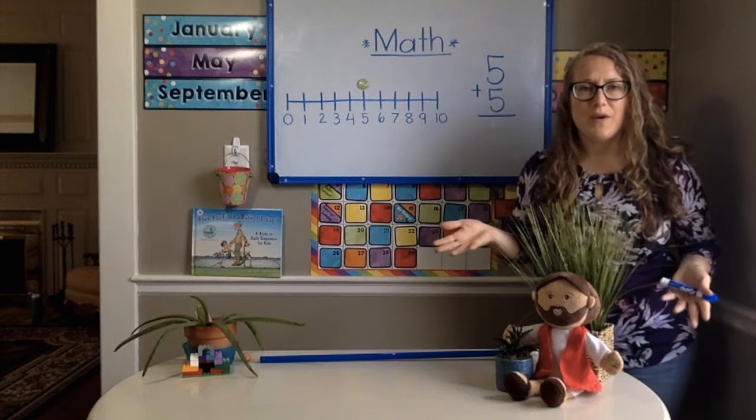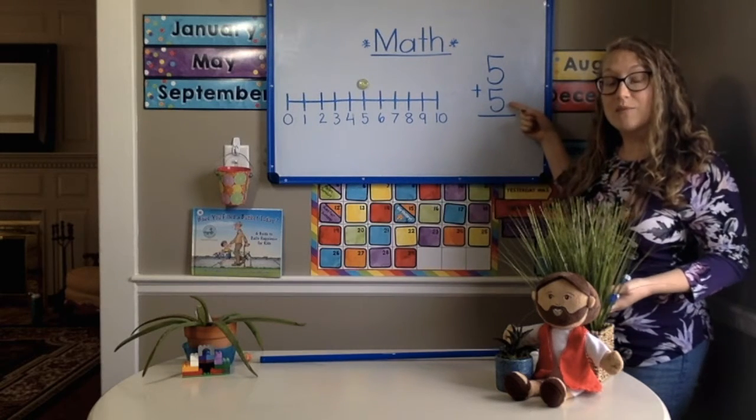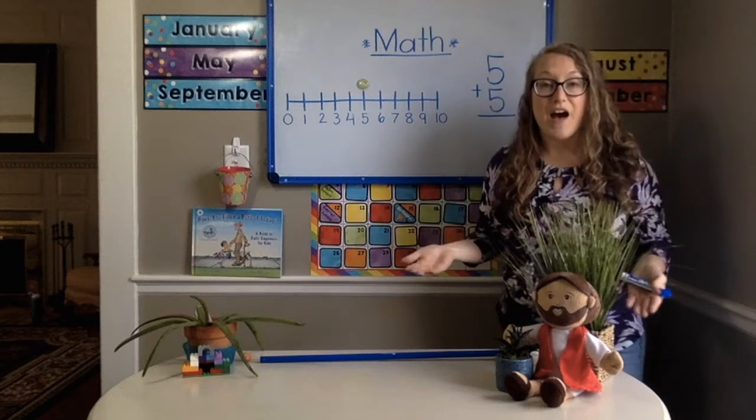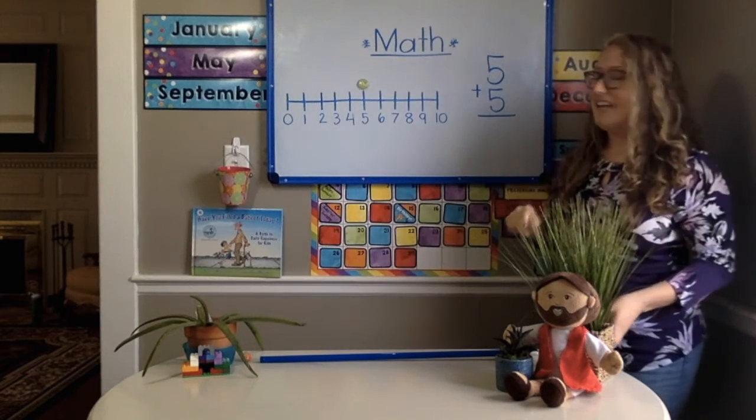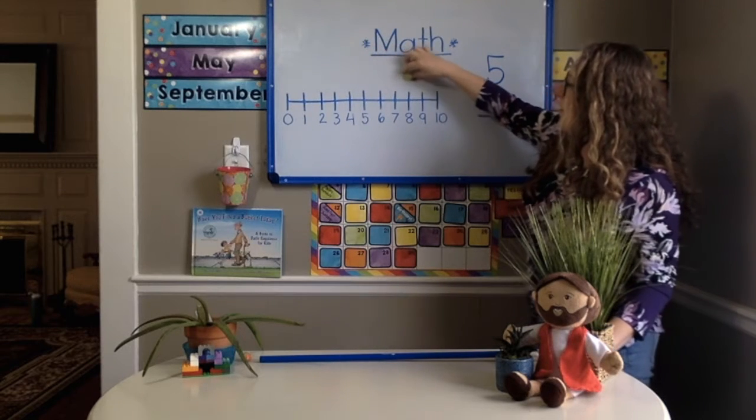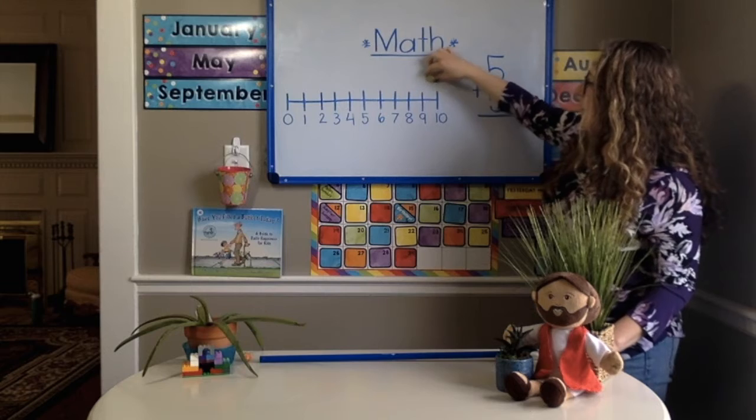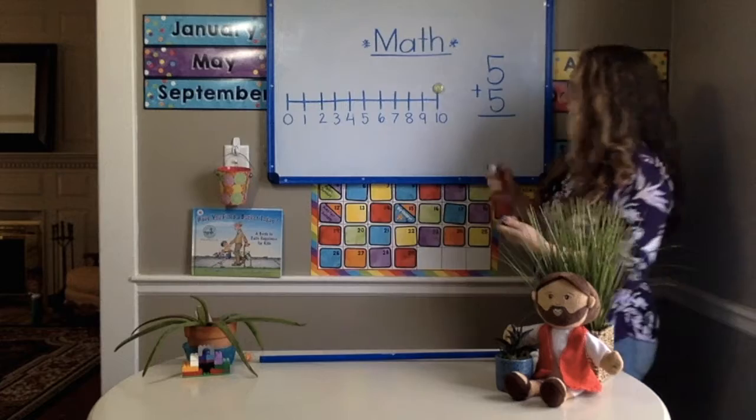How many spaces are we going to move it? We're going to move it 5 spaces. Our next number is 5, so we're going to move it 5 spaces toward the big numbers kindergarten. Here we go. 1, 2, 3, 4, 5. What number did it land on? It landed on 10.